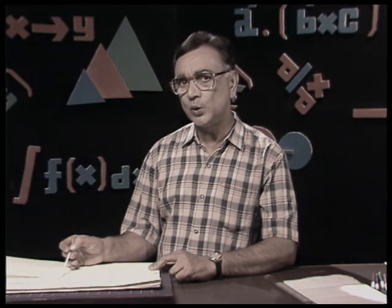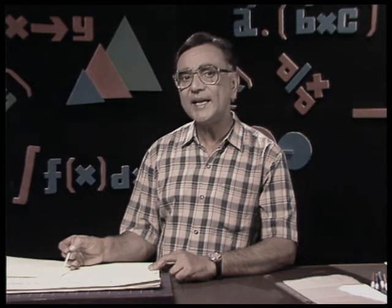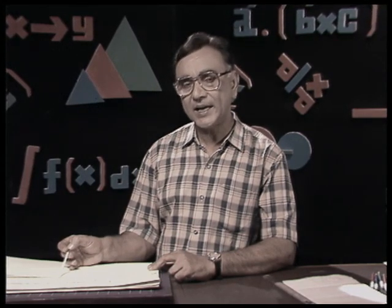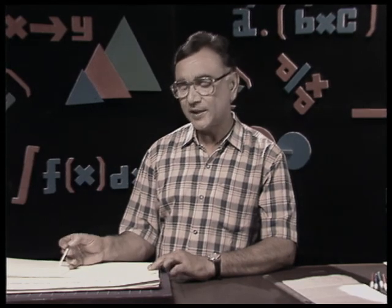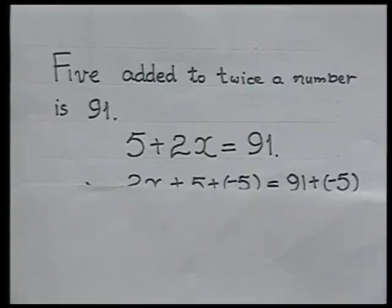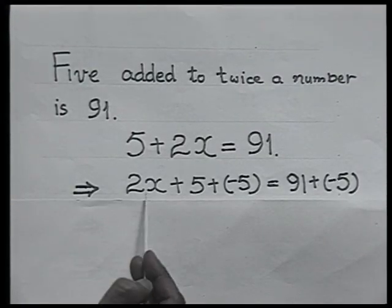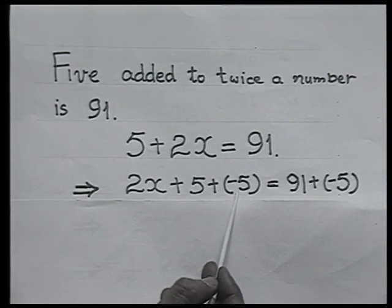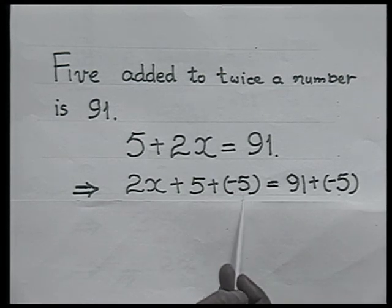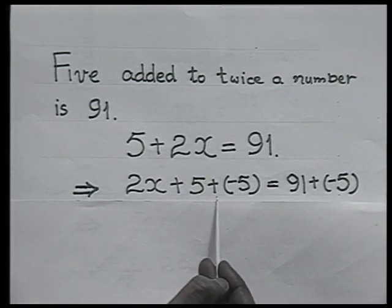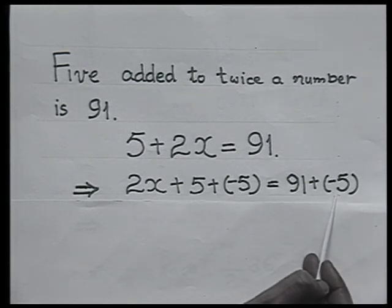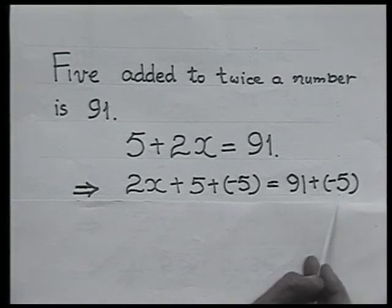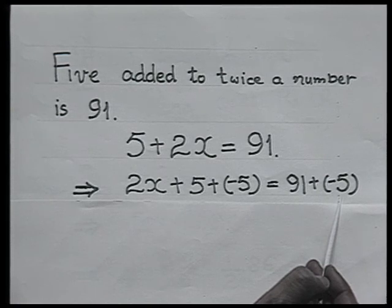The number which was not known to me I have taken as x, and we take that as a variable. To find the value of x, I take 2x plus 5 and to remove this 5, I add negative 5 to it. In an equation, if a certain number is added to the left hand side, the same number has to be added to the right hand side. So negative 5 has been added to both sides of this equation.